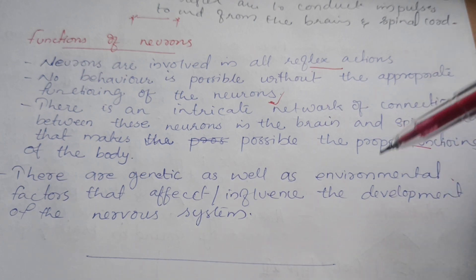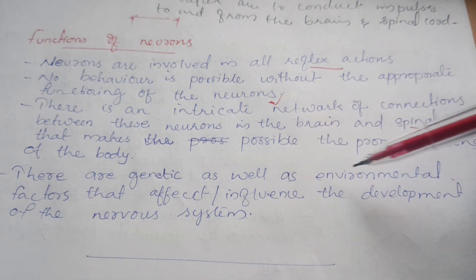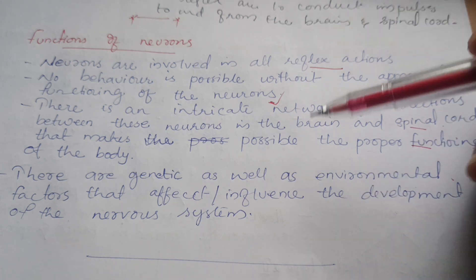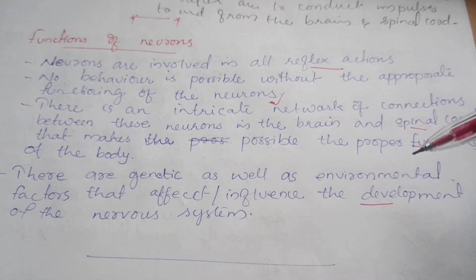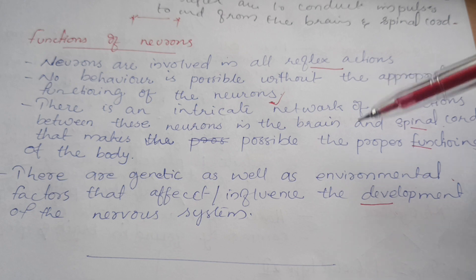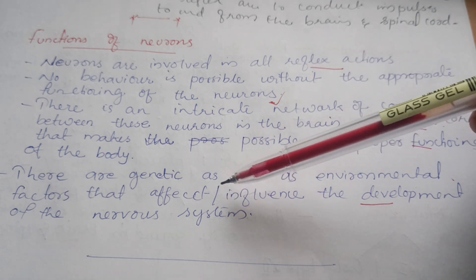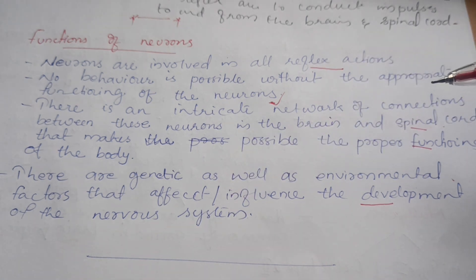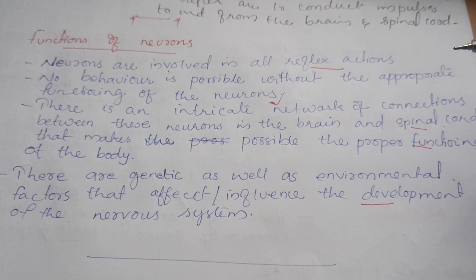There are genetic and environmental factors that affect and influence the development of neurons. Many genetic and environmental factors shape how neurons function and develop.